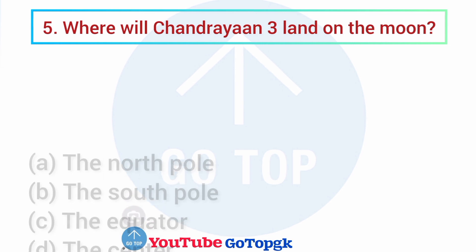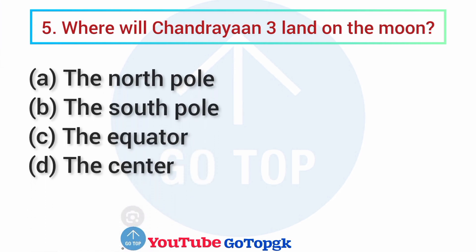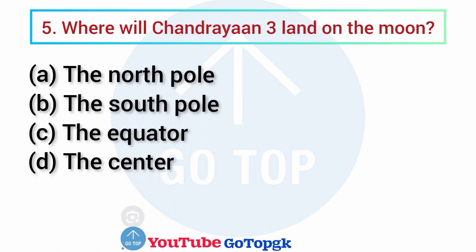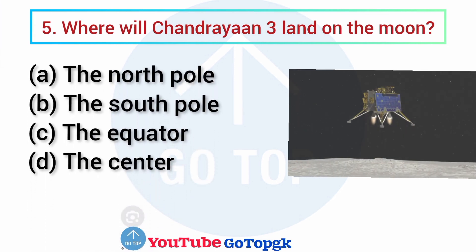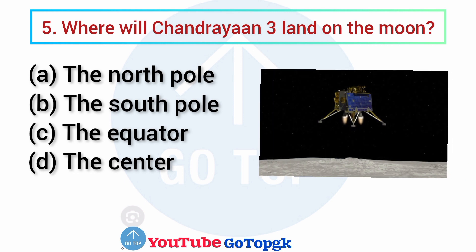Question No. 5. Where will Chandrayaan-3 land on the moon? Options: A. The North Pole, B. The South Pole, C. The equator, D. The center. Your correct answer is option B: The South Pole.